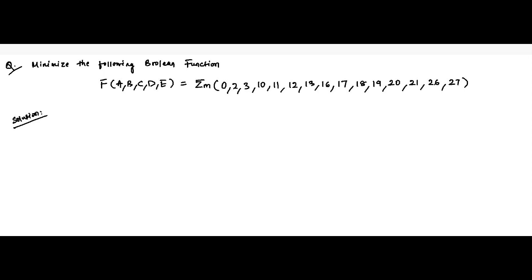Hello friends. Here is another question on simplification of 5-variable SOP or minterm type Boolean functions. This is the function given in terms of variables A, B, C, D, E. Minterm values are 0, 2, 3, 10, 11, 12, 13, 16, 17, 18, 19, 20, 21, 26, 27.